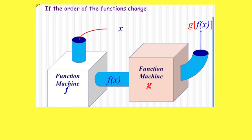For this set of function machines, if x is the input and goes into function machine f, out comes f of x. f of x then goes into function machine g and out comes g of f of x.